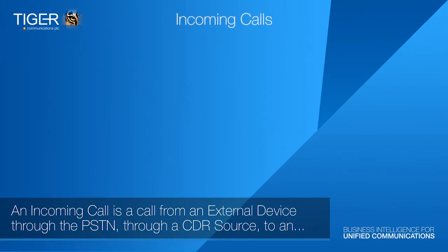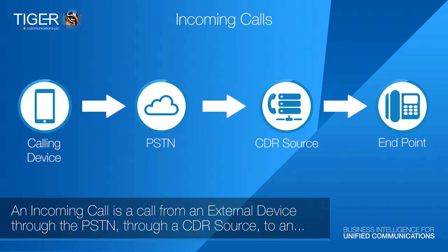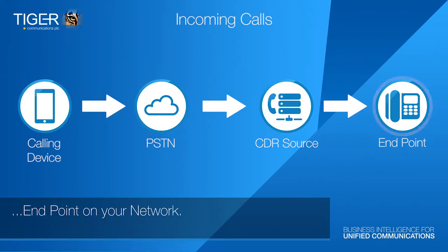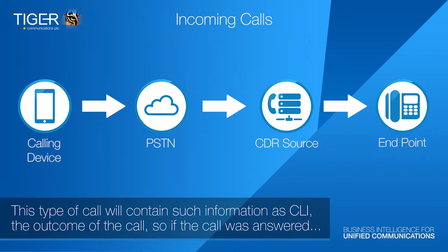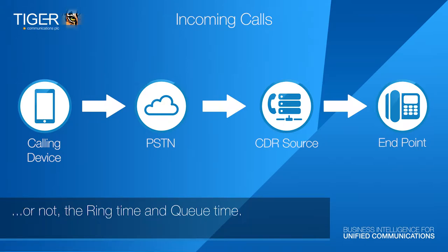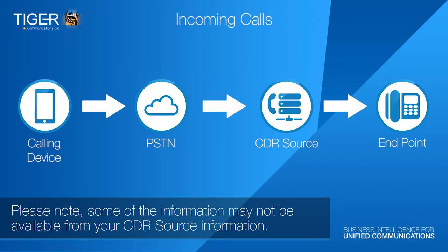An incoming call is a call from an external device through the PSTN, through a CDR source, to an endpoint on your network. This type of call will contain such information as CLI, the outcome of the call (whether it was answered or not), the ring time and queue time. Please note some of this information may not be available from your CDR source.